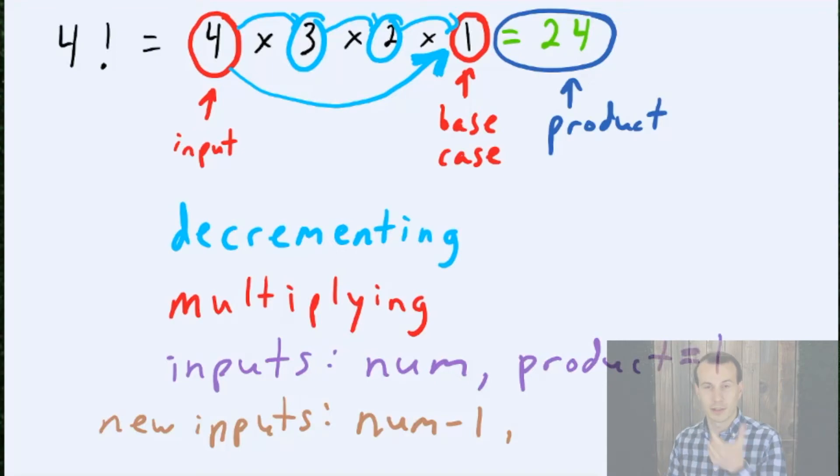Because when we have 4, we want to multiply by that. We want to use it before decrementing it. So, this would probably be product times num. And so with this strategy, this seems like it should work. Let's go ahead and try to implement it.